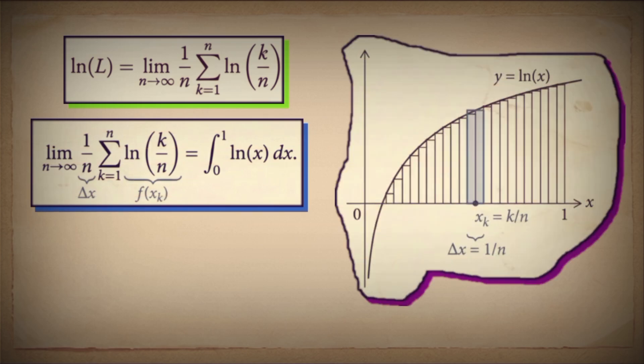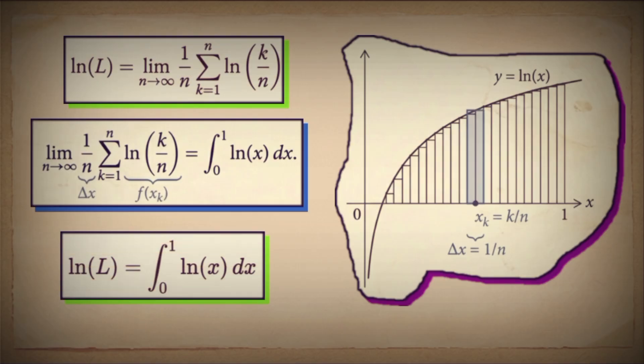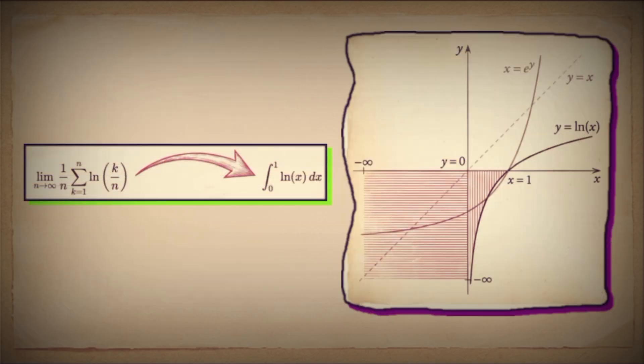We have (1/n) times a sum where k/n runs from 1/n to 1. This is a Riemann sum. As n approaches infinity, the width Δx = 1/n goes to 0, and this sum converges to the definite integral of ln(x) over the interval from 0 to 1. Therefore, ln(L) equals the integral from 0 to 1 of ln(x) dx. We have transformed an elusive limit of a discrete sequence into a concrete calculus problem: find the area under the natural log curve from 0 to 1.